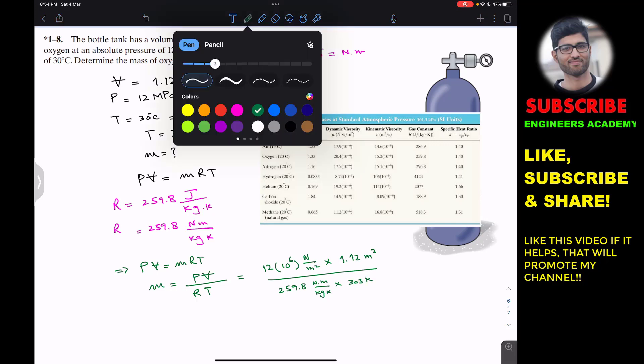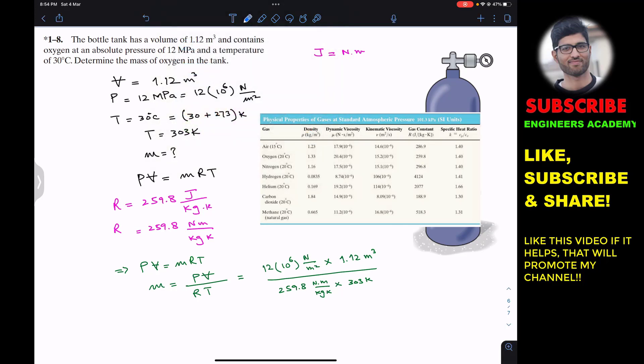If we look into all the units, the Kelvin will cancel out, meter square will cancel out and we will be left with only one meter. Similarly, newton will cancel out as well and then meter will also cancel out. So we are only left with the kilogram.